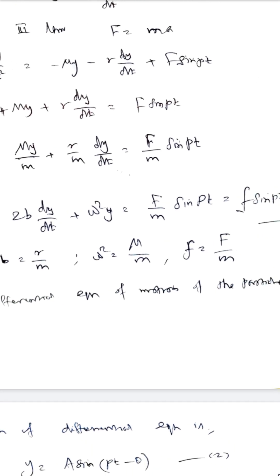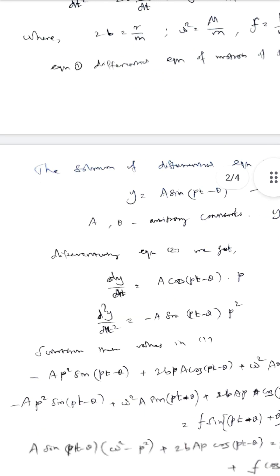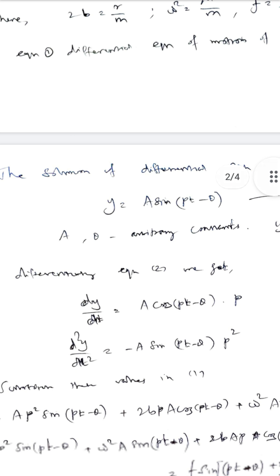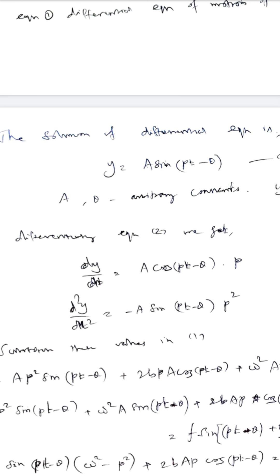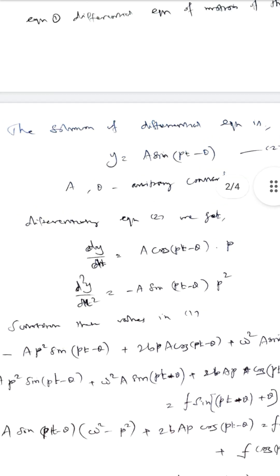In the second-order differential equation, the general solution is y = A sin(pt − θ). Differentiating with respect to time t: dy/dt = Ap cos(pt − θ). Differentiating again with respect to t: d²y/dt² = −Ap² sin(pt − θ).